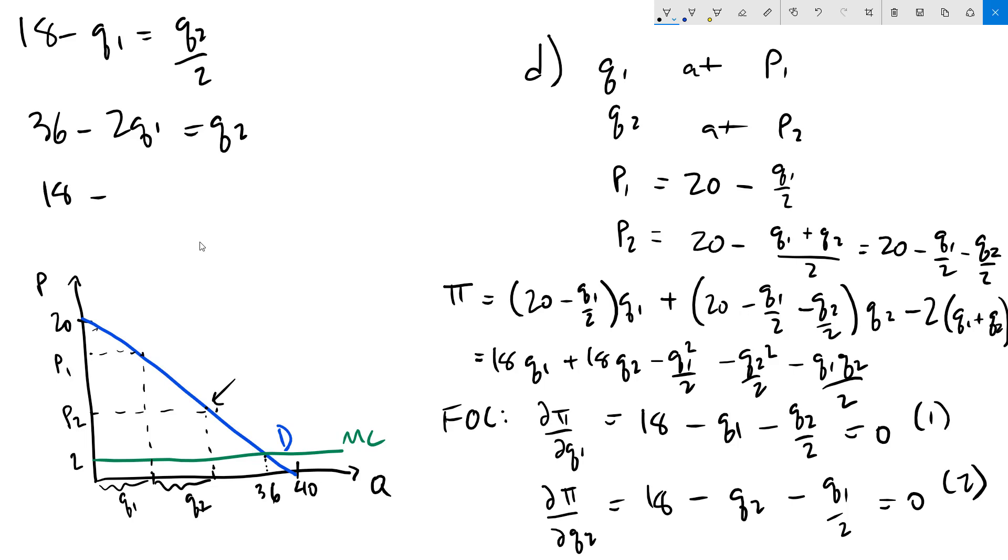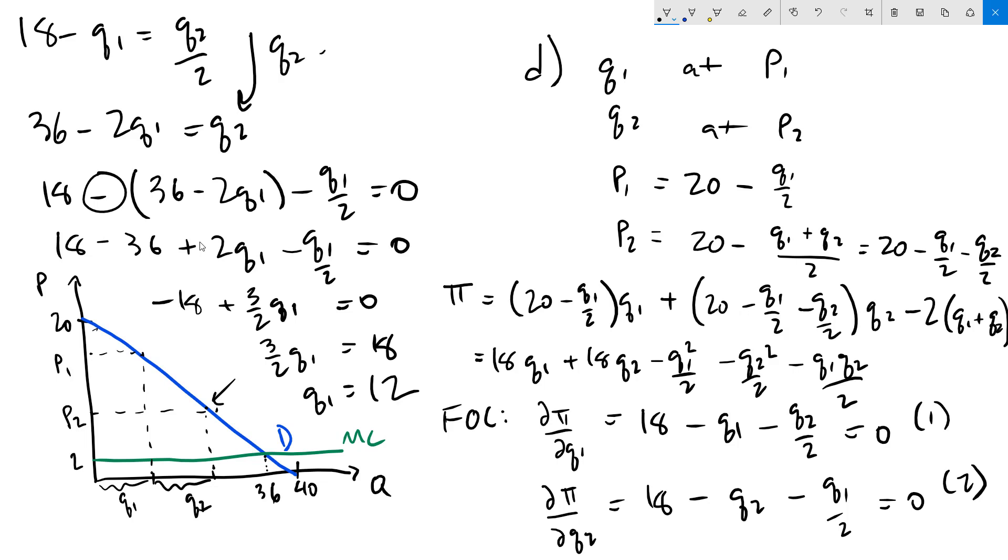So what we get is 18 minus now here's where I plug in 36 minus 2 Q1 minus Q1 over 2 equals 0. Now we have to solve for Q1 and here again we need to be very careful about distributing this minus sign right here. So we get 18 minus 36 but plus 2 Q1 minus Q1 over 2 equals 0. Let's collect terms and we get negative 18 plus 3 halves Q1 equals 0. Add 18 to both sides. Multiply both sides by 2 thirds and we get a quantity of 12. Plug that back in to this equation right here gives us Q2 equals 36 minus 2 times 12 which is also 12.